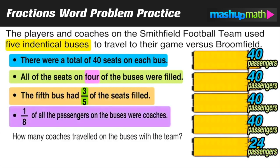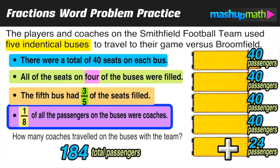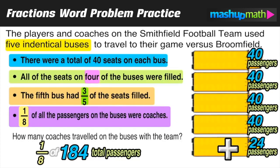Our final bullet point says that one-eighth of all passengers on the buses were coaches — and that's what we need to find out. To find the total number of passengers, we add all the values up. The sum of all passengers across the five buses is 184 — a combination of players and coaches. Now we need to find what one-eighth of 184 is.